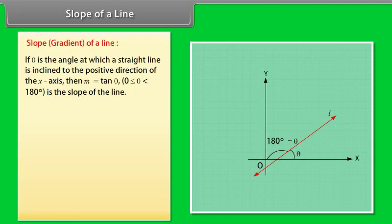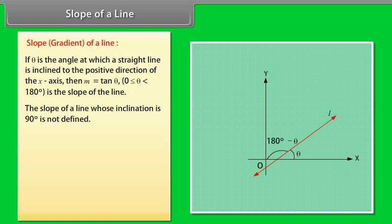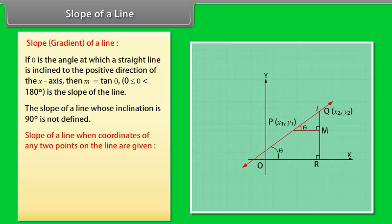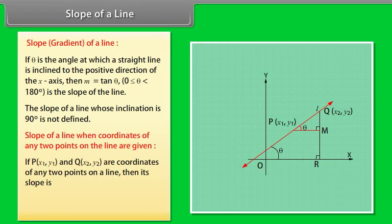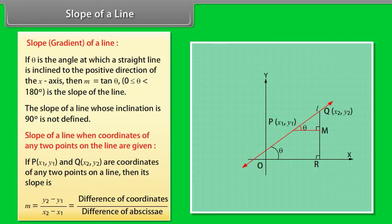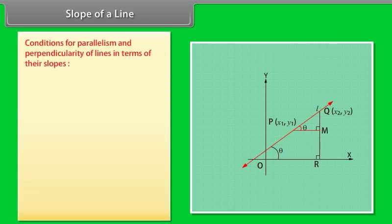Slope of a line: If theta is the angle at which a straight line is inclined to the positive direction of the X-axis, then M equals tan theta, where 0 is less than or equal to theta and theta is less than 180 degrees, is the slope of the line. The slope of a line whose inclination is 90 degrees is not defined. When coordinates of any two points on the line are given — if P(X1, Y1) and Q(X2, Y2) are coordinates of any two points on a line, then its slope is M equal to (Y2 minus Y1) divided by (X2 minus X1), which equals the difference of ordinates divided by the difference of abscissas.